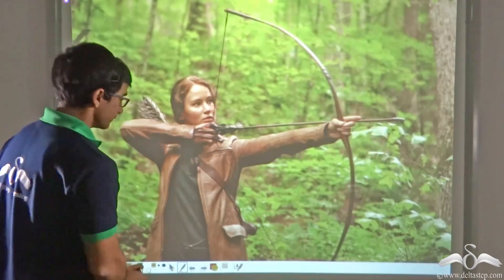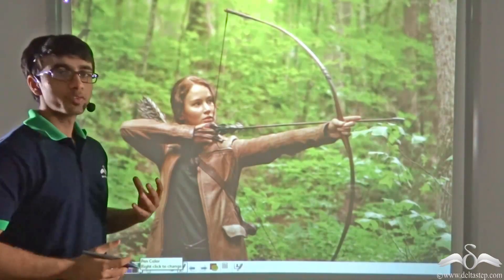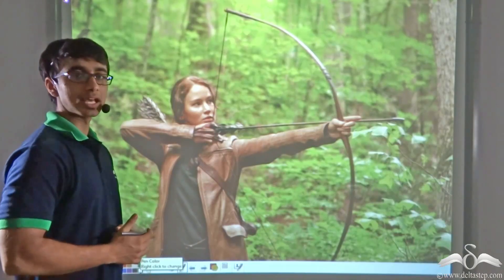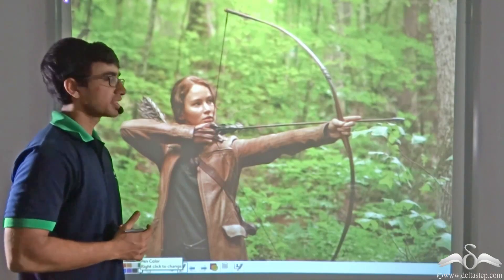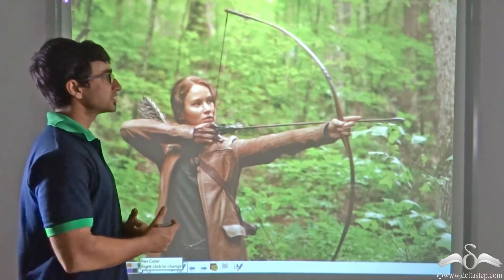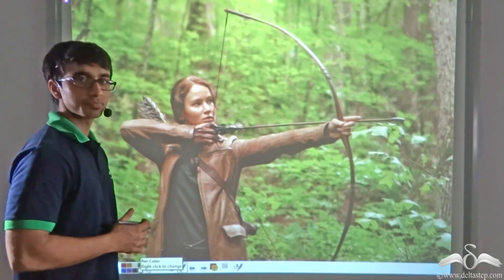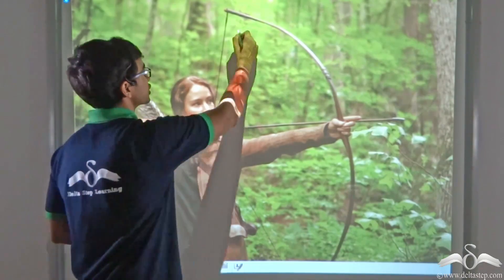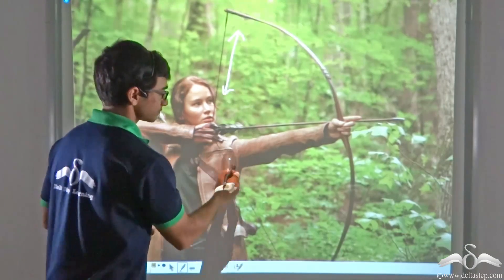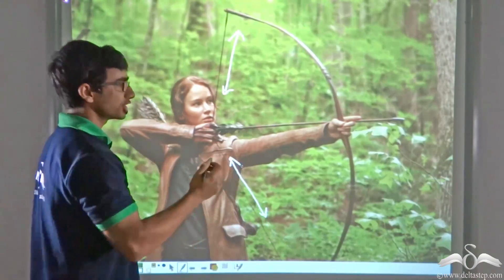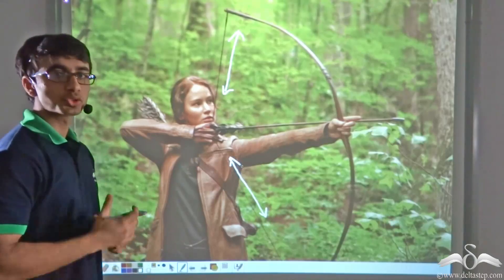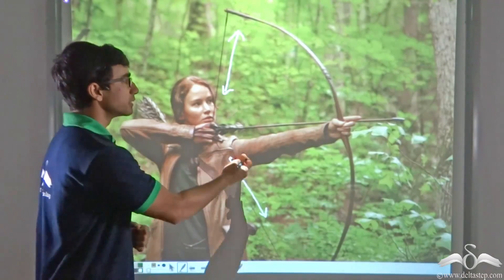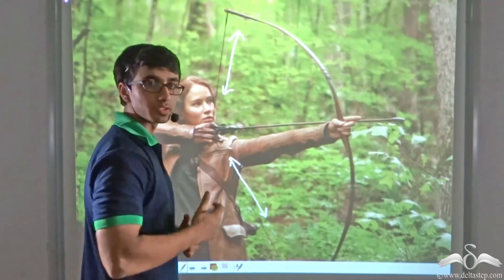Now consider this picture. Katniss Everdeen is aiming her bow and arrow at a particular target. When she takes hold of her bow and arrow, without stretching the string, if she wants to fire her arrow, the arrow merely falls off to the ground in front of her.